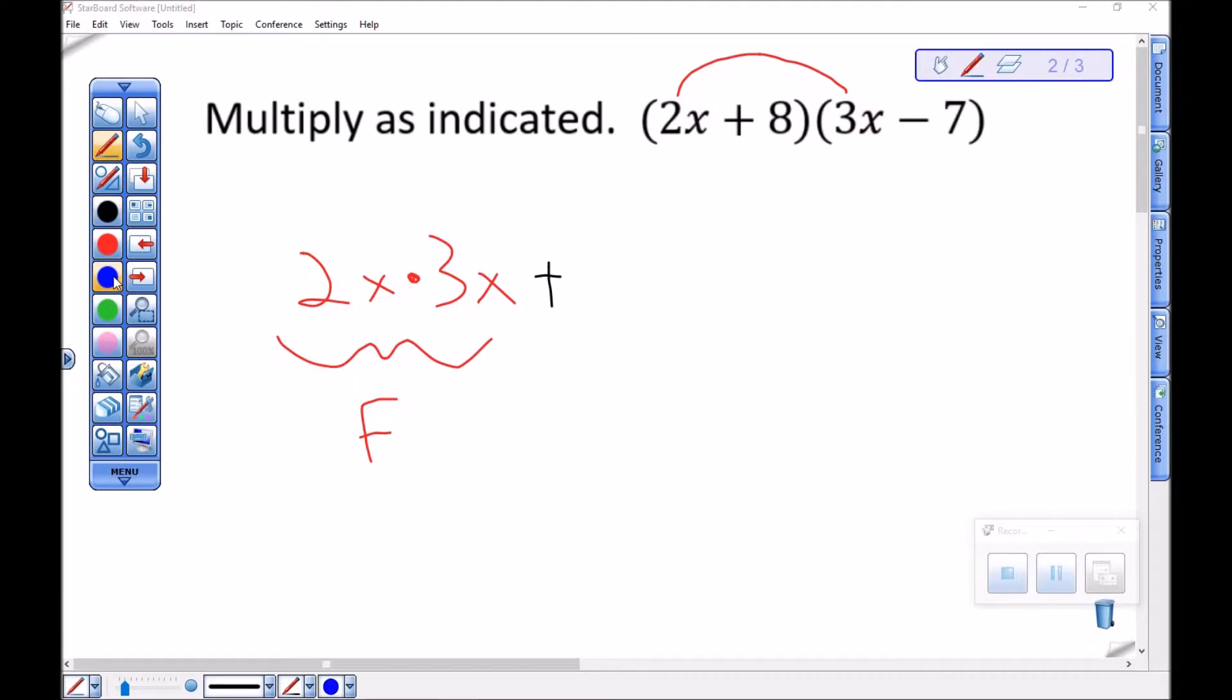Plus, and then I have O for outside. Outside would be this guy and that guy. Note the sign on this term is negative. So that's really 2x times negative 7.